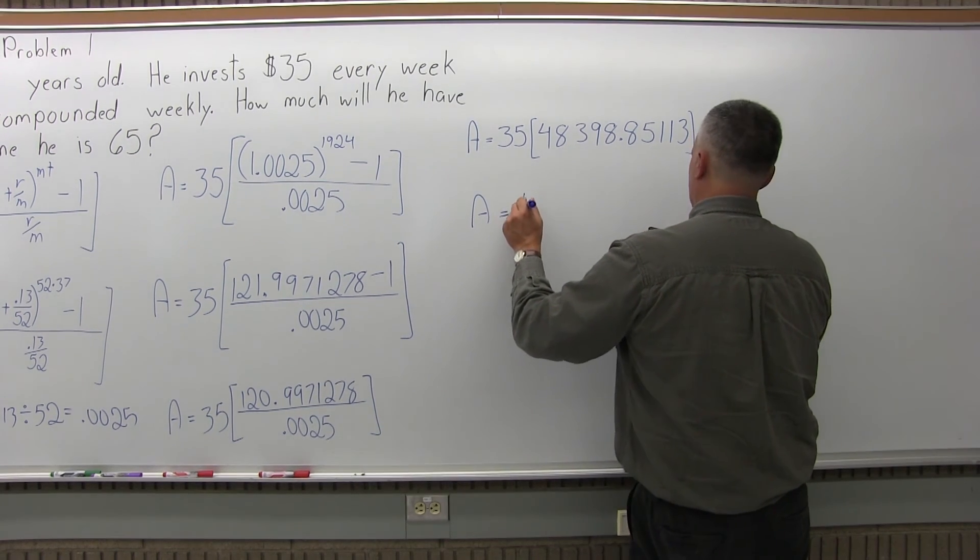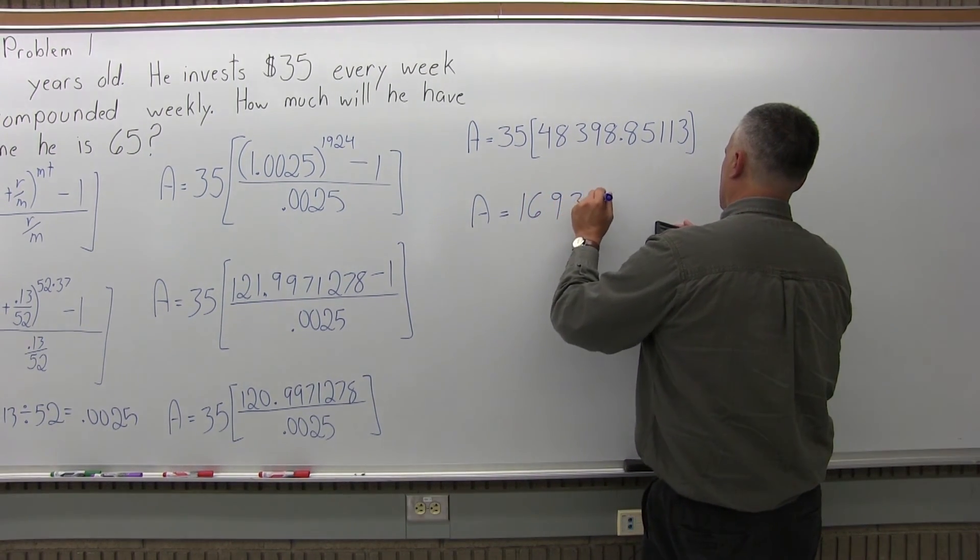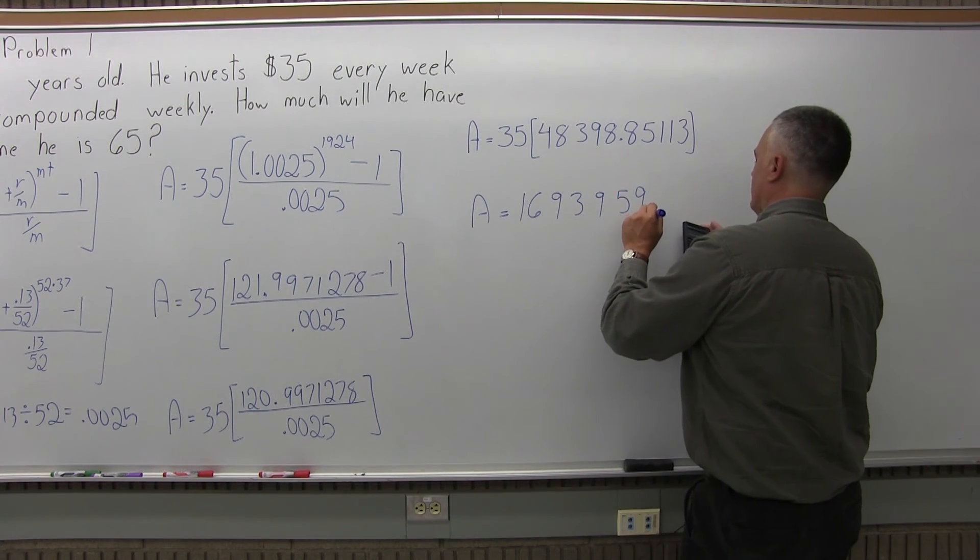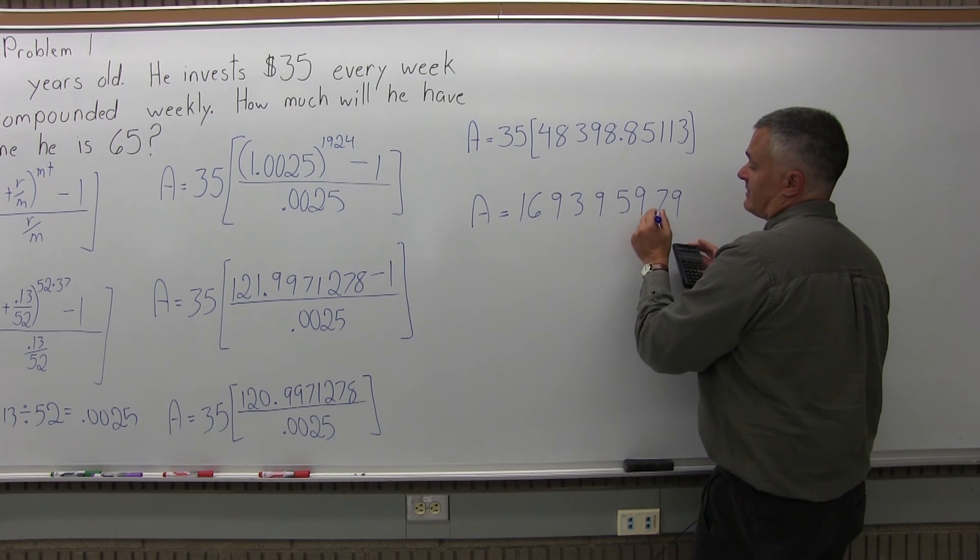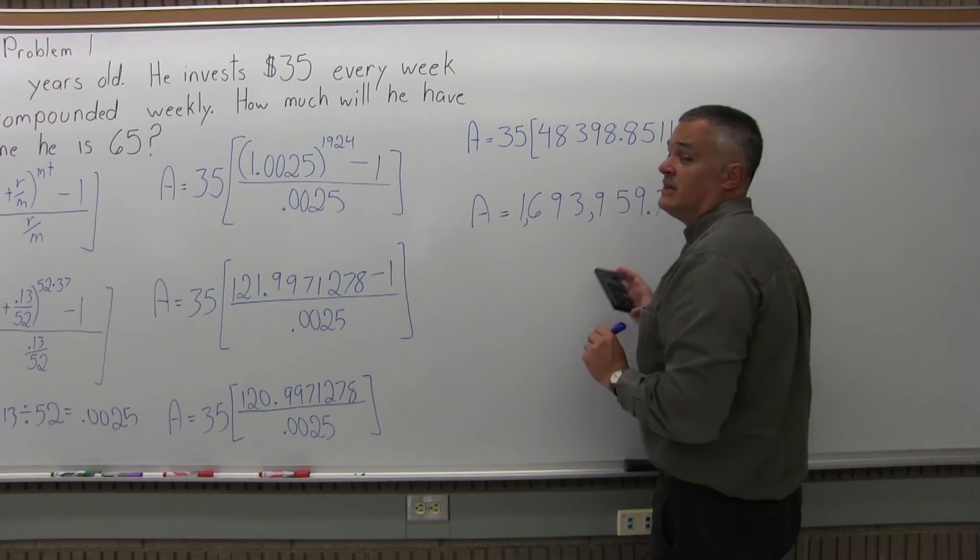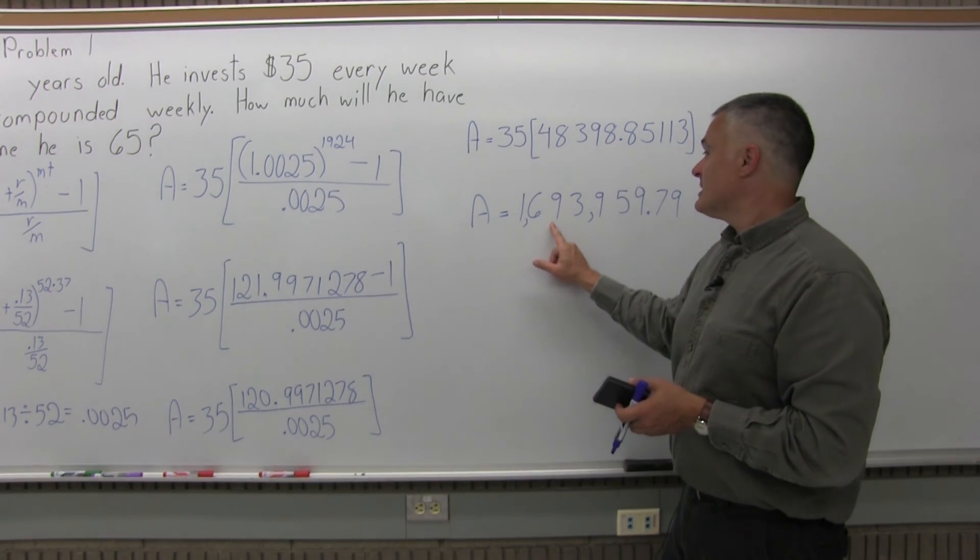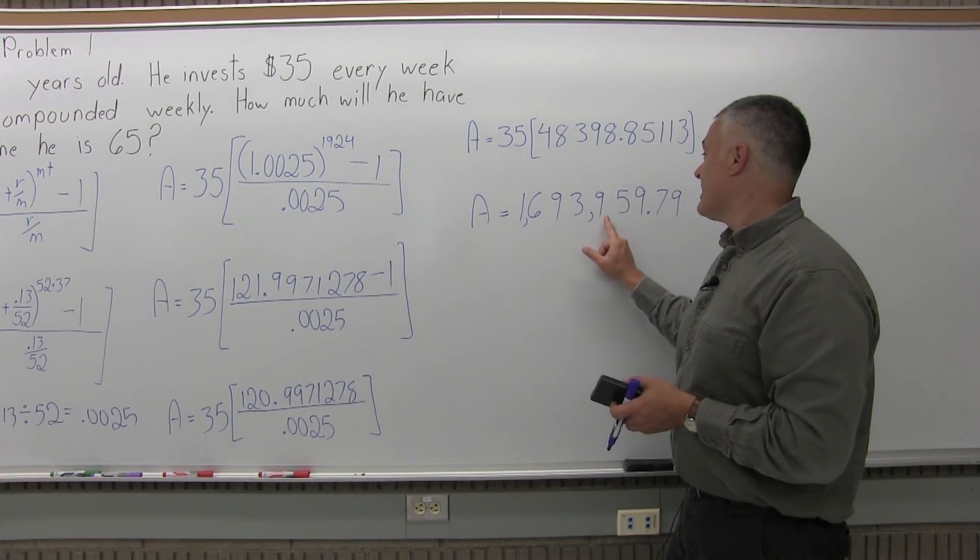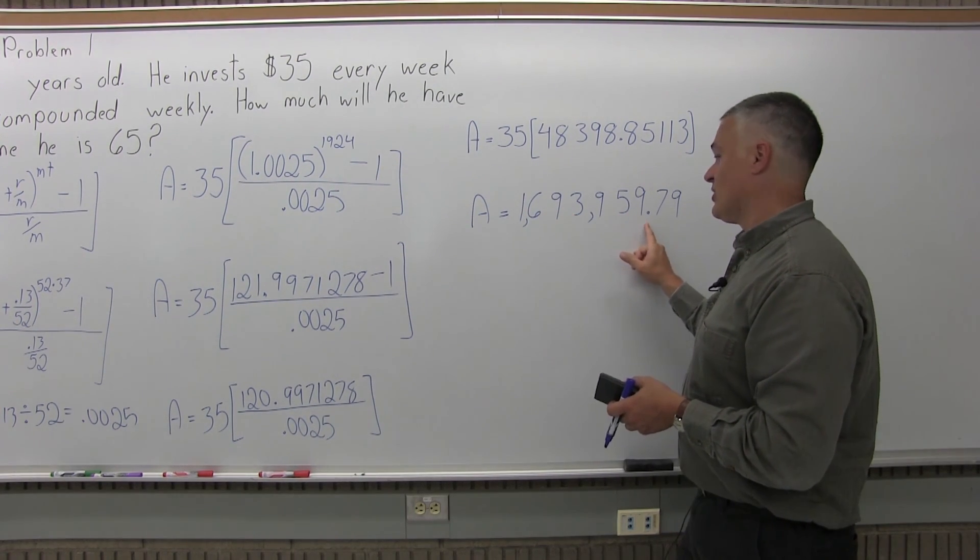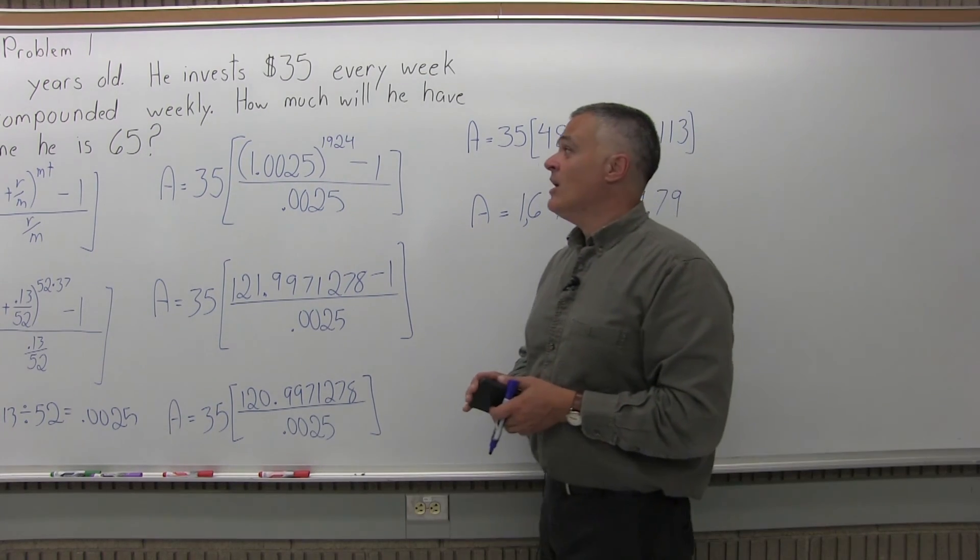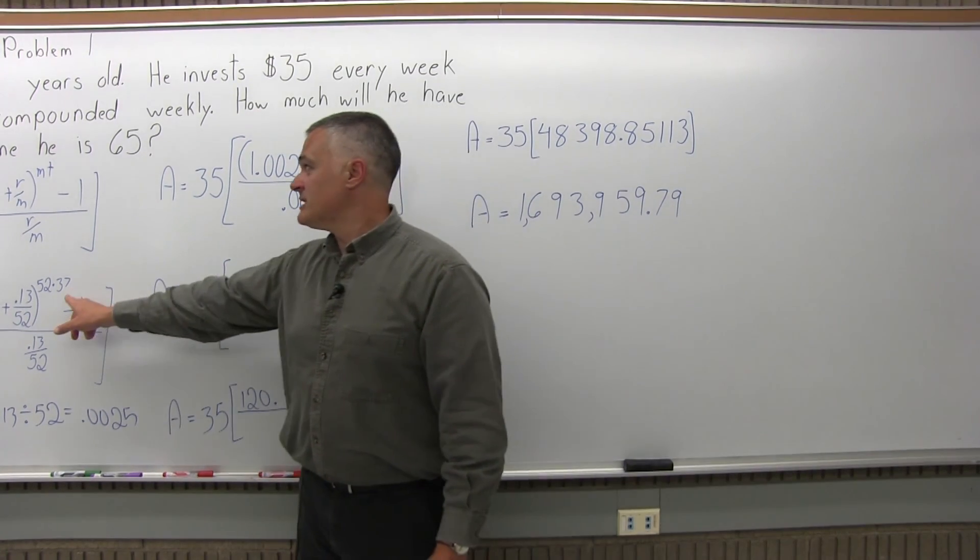And now the answer comes out to 1,693,959.79, and it actually just winds up having two places after the decimal. And if you count up the digits, that's well over a million dollars. $1,693,959.79 from saving only $35 a week, but over a very long period of time, 37 years.